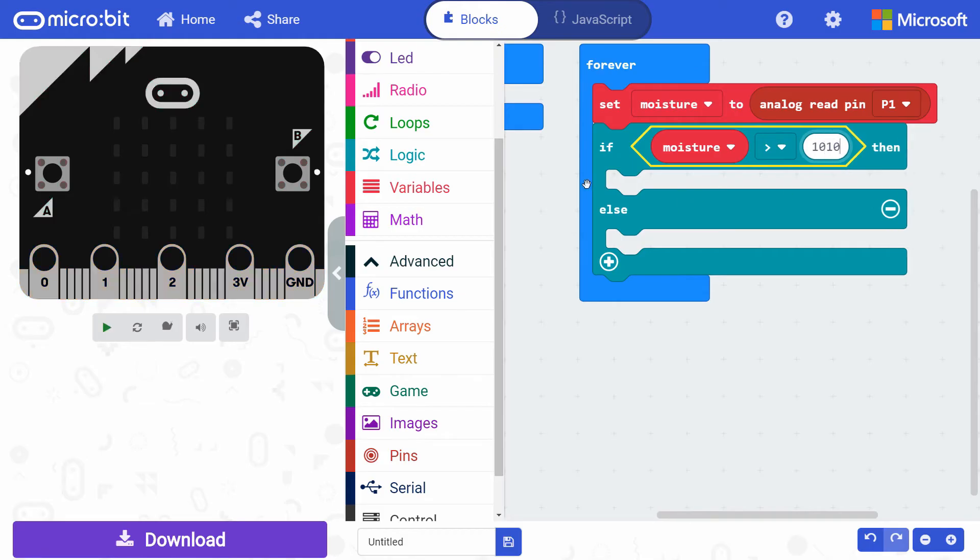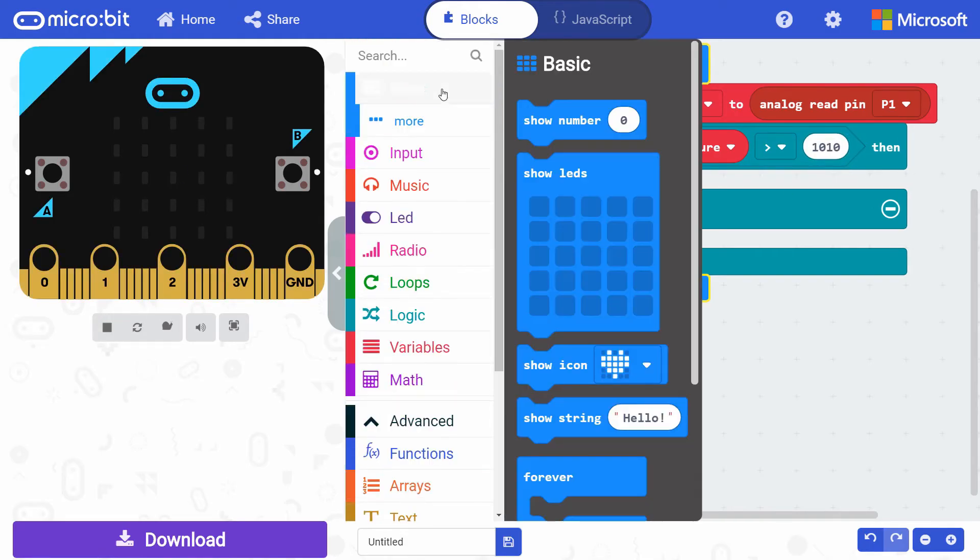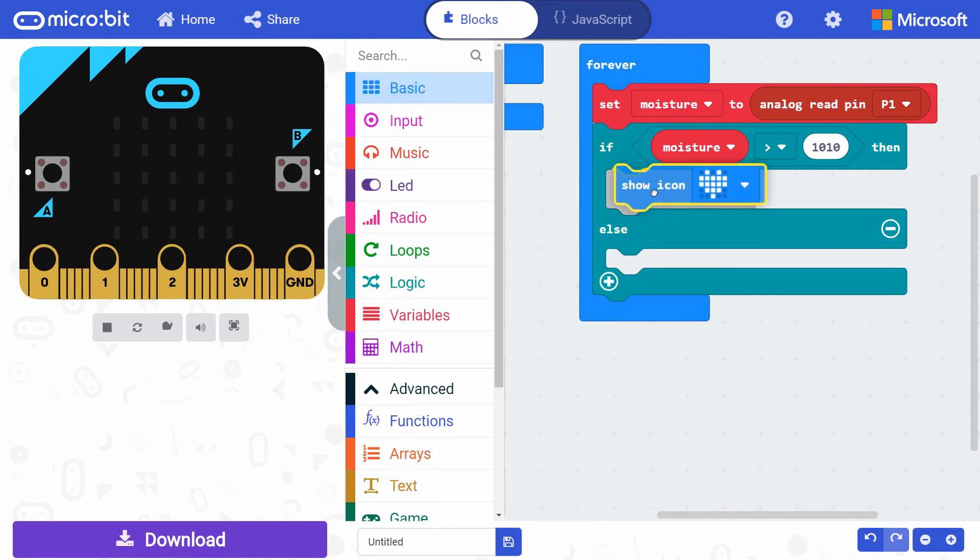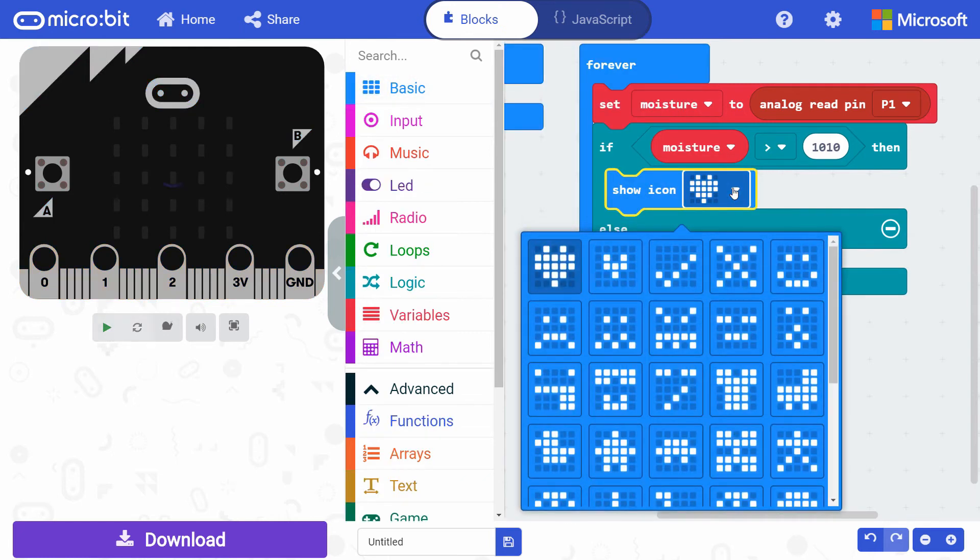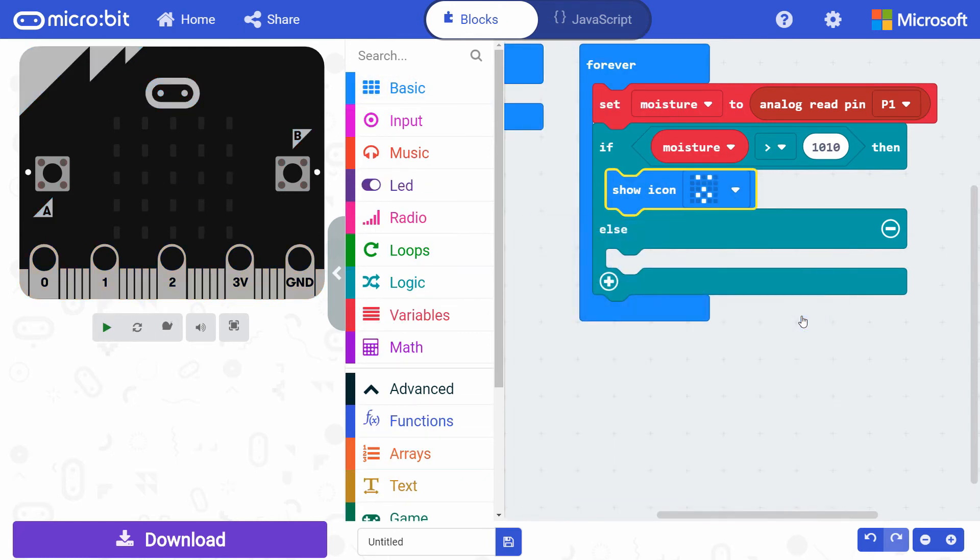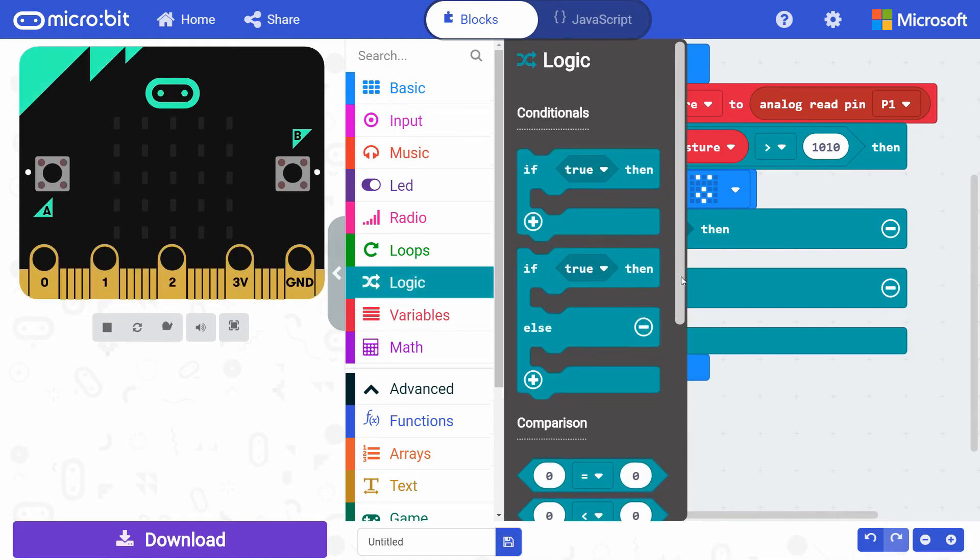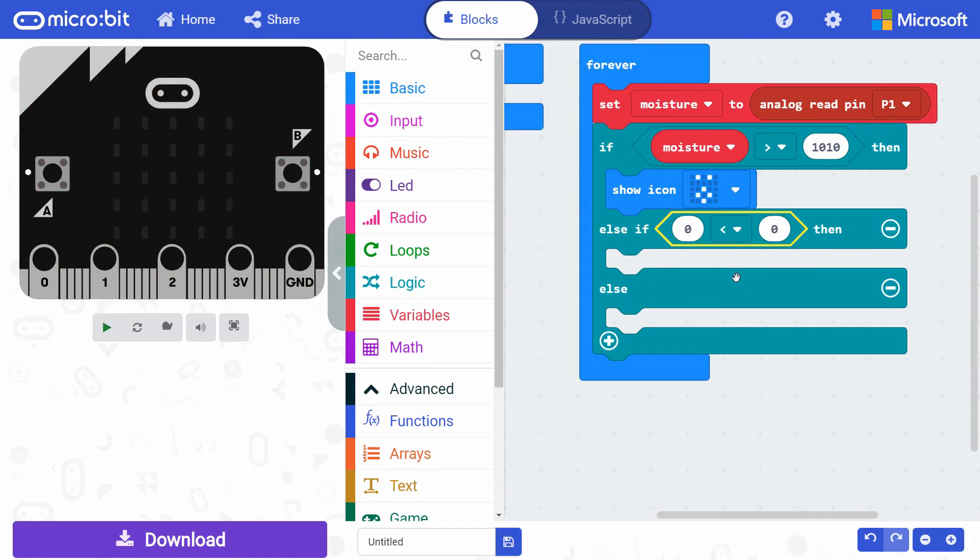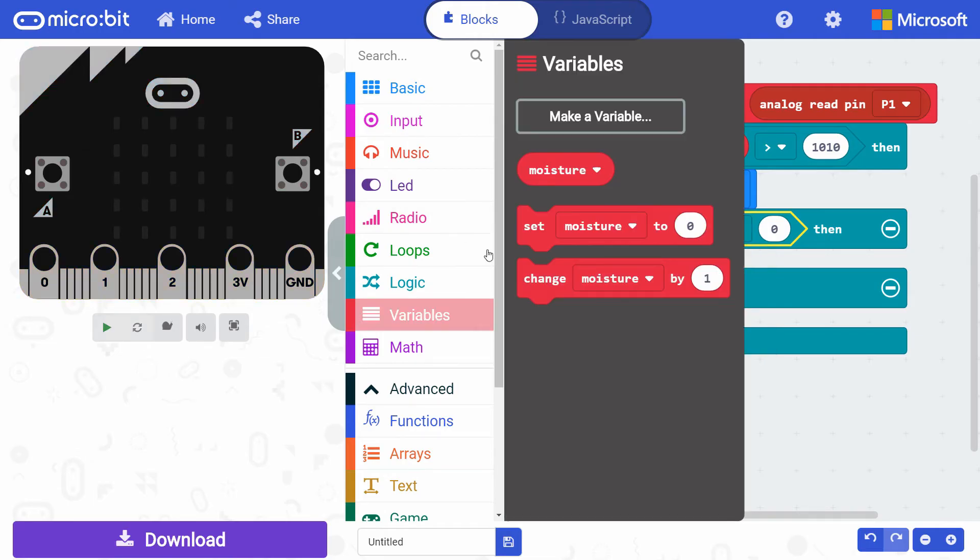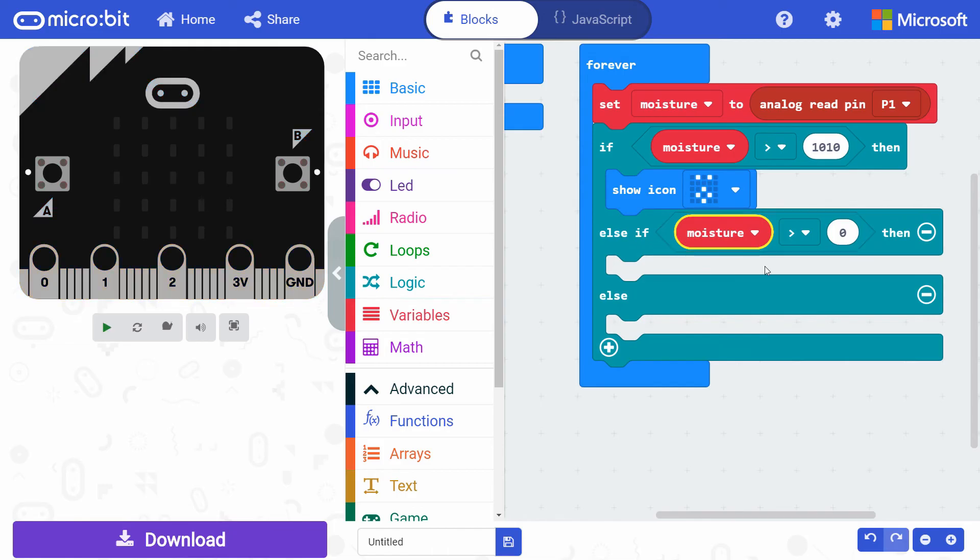Get a show icon block from basic and snap it under this condition. Change the show icon to something like a surprised face. This will indicate that the plant has too much water. Click the plus button on the if else block to make a new else if statement appear. Get another less than block from logic and snap it to this new condition. Change the less than symbol to a greater than symbol. Put another moisture variable in the left side of this inequality block.